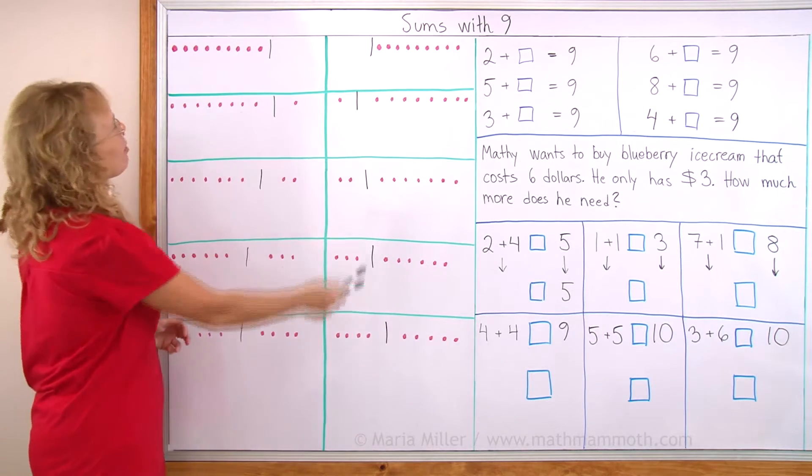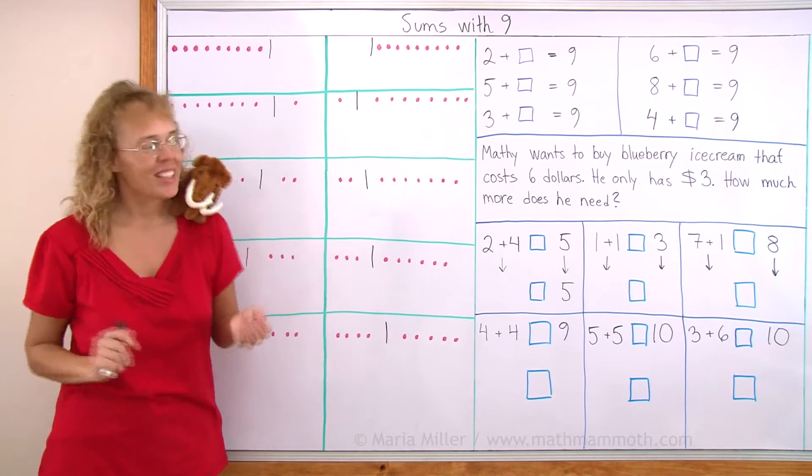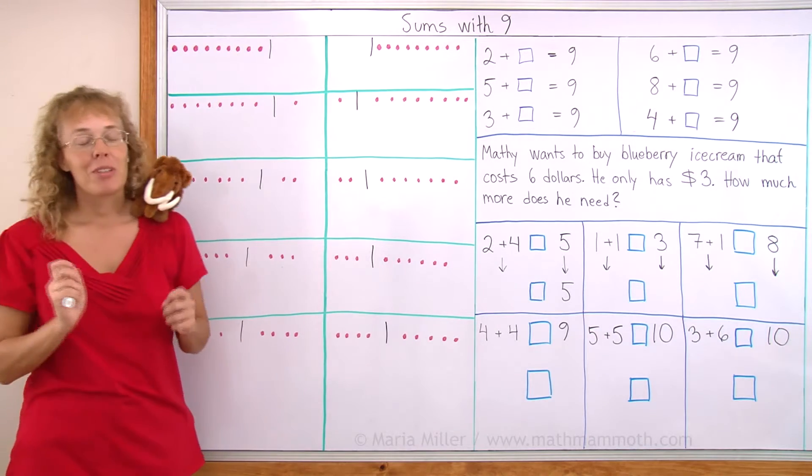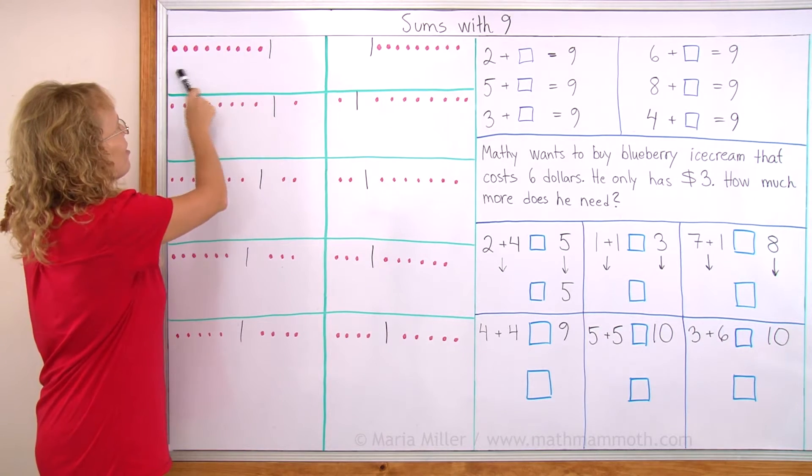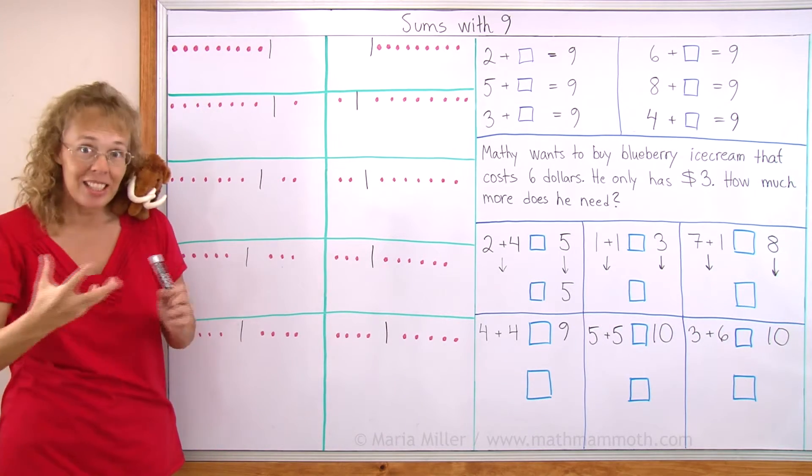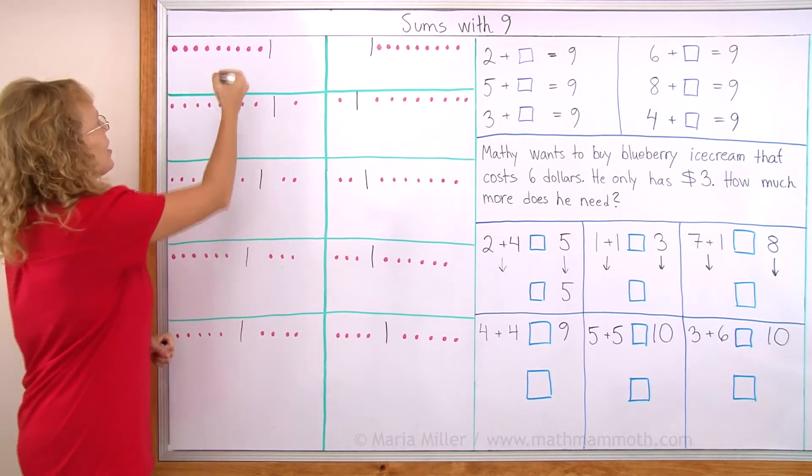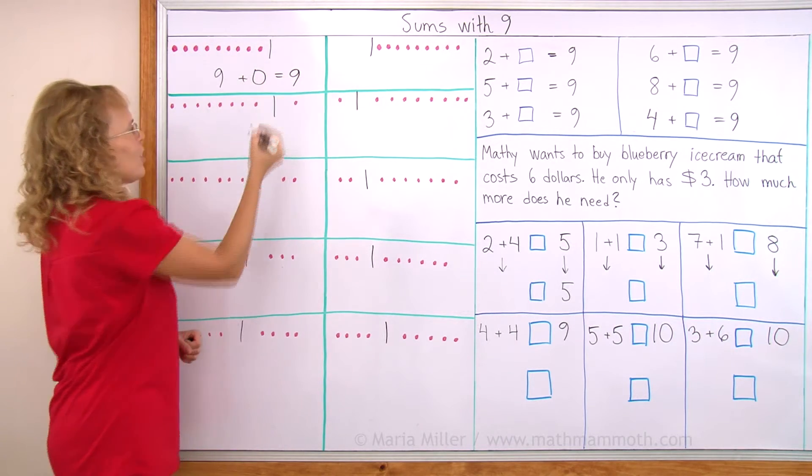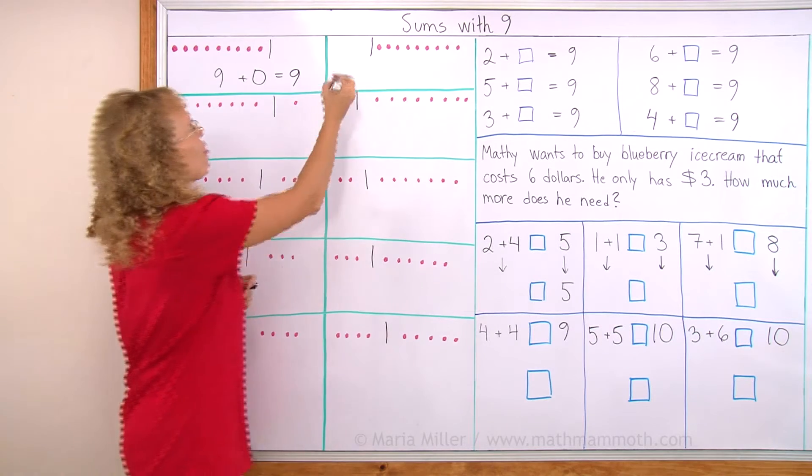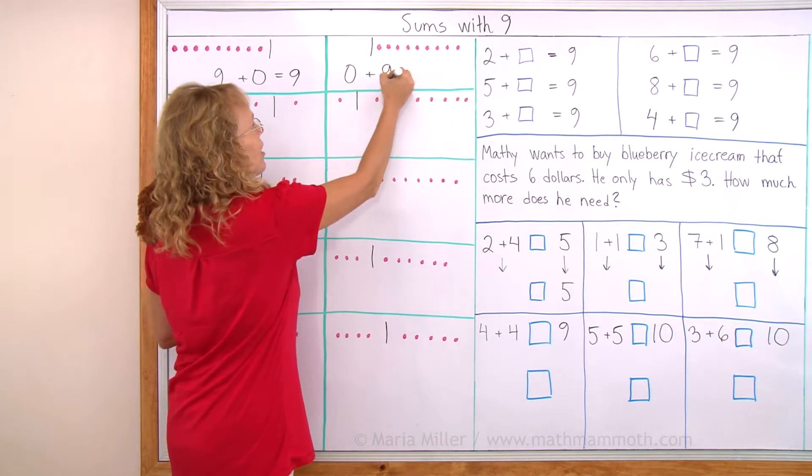And here I have my table and there's lots of lingonberries there, these little red things. Or maybe you want to think of them as mini strawberries. Here I have two groups, 9 on this side and 0 on this side and that makes a total of 9, right? So I write 9 plus 0 equals 9. And you already know how this works. So here we have 0 plus 9 equals 9.